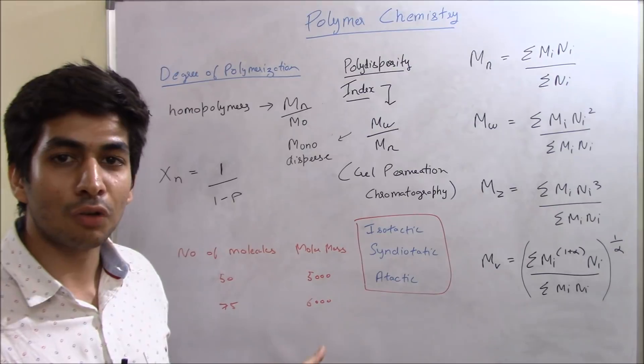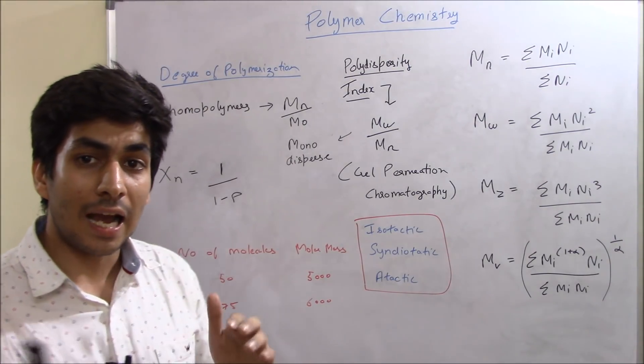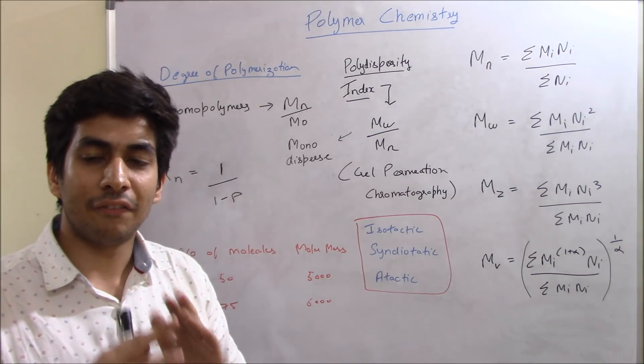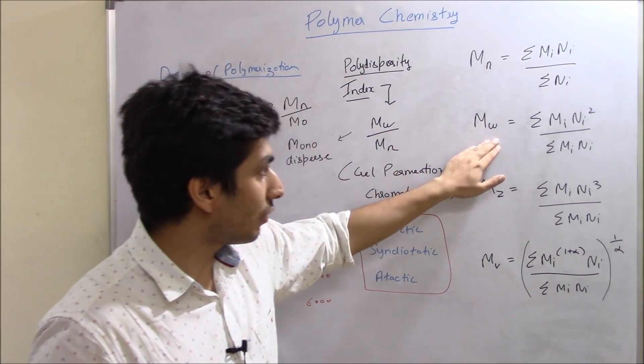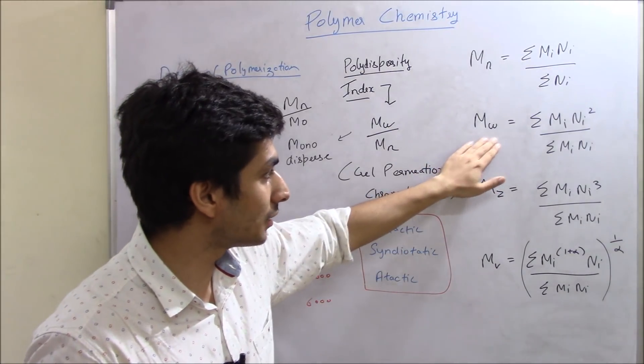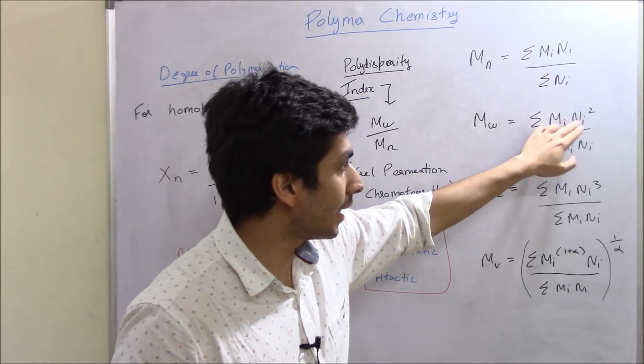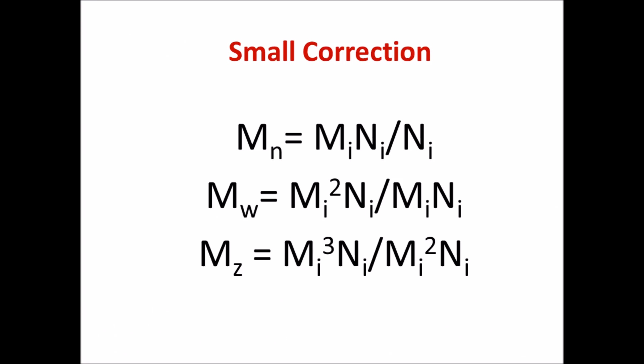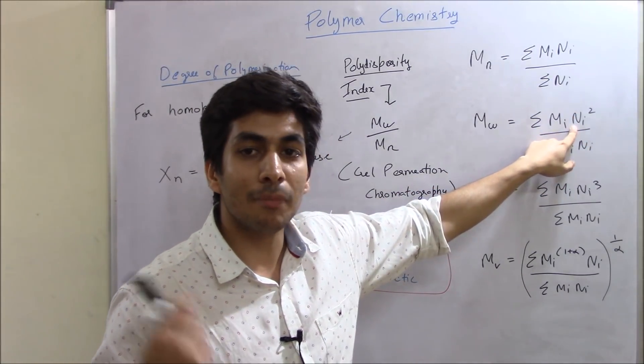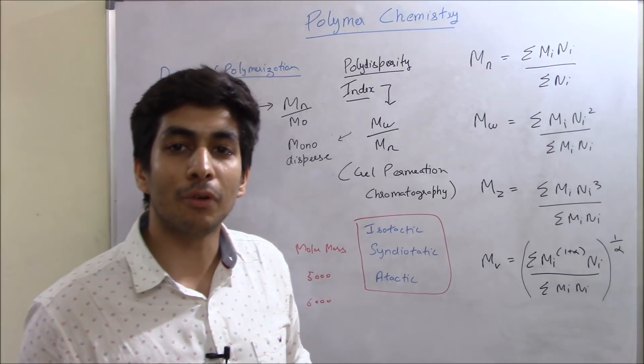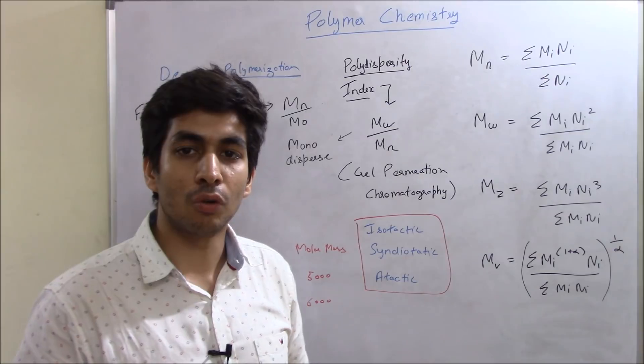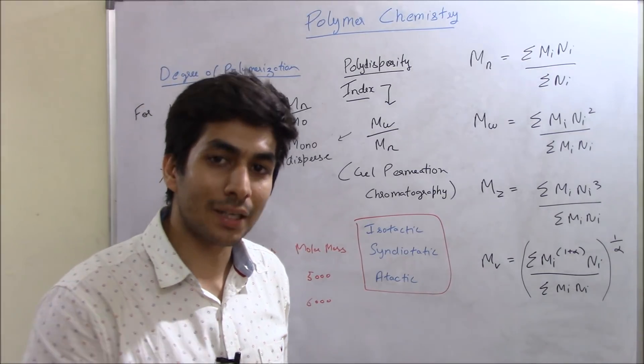So 45,000 plus 25,000 that gives us 70,000. And 70,000 upon total number of molecules. How many total number of molecules are there? 75 plus 50 that is 125 molecules. So 70,000 upon 125 and that gives us the answer 5,600. This question, believe me, was for four marks in your CSIR NET December 2017. And similar question was asked in your June 2017 exam as well. So it's a very basic formula. Now the next one, the next formula is similar to the number average molar mass. That's weight average molar mass, summation mi ni square. You just have to square the ni term.